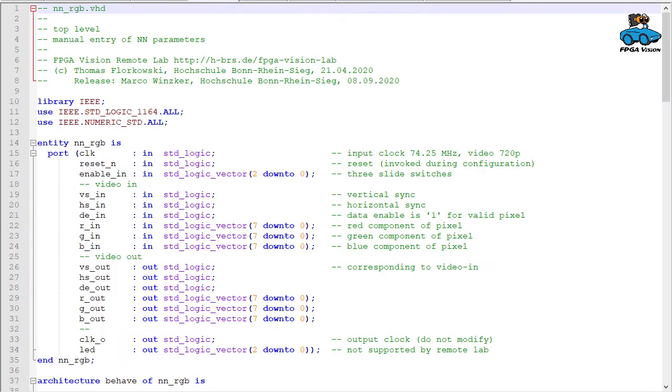Here we have the VHDL code. This is our top level, entity NN_RGB. These are the inputs. We have clock signal switches, which we are not using here. Then this is the video input interface: vertical sync, horizontal sync, data enable, red, green, blue input.